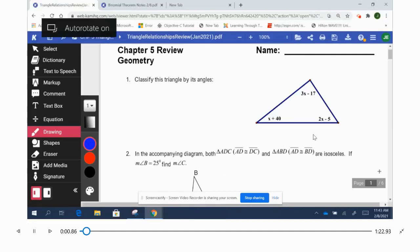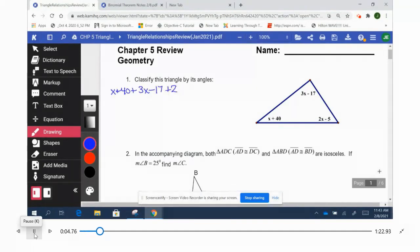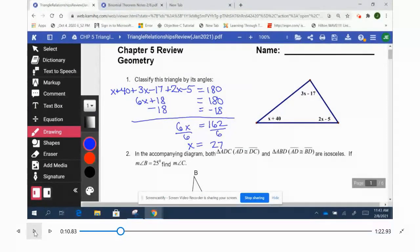Chapter 5 review solutions, page 1. First question, we're going to take the interior angles of the triangle and add them to equal 180. Just solve, we get x is 27, and then we'll substitute back into each individual angle.